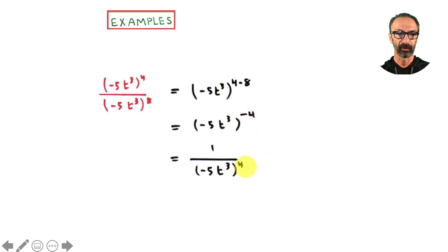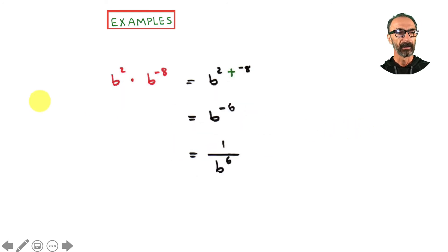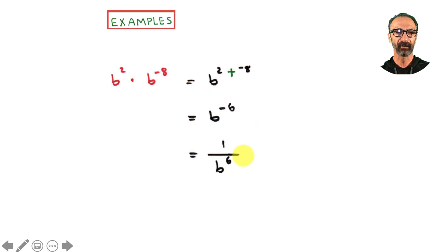One more example: negative five times t to the third over something — same base, subtract exponents: four minus eight is negative four. Since we're asked to leave the answer without negative exponents, bring it down and change negative to positive. Another example: same base, add the exponents two plus negative eight which is negative six. Take the reciprocal to make the exponent positive six.